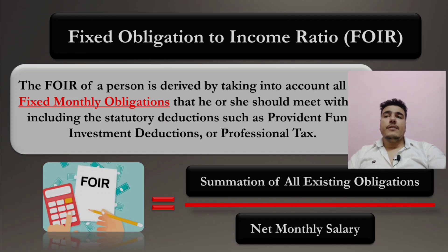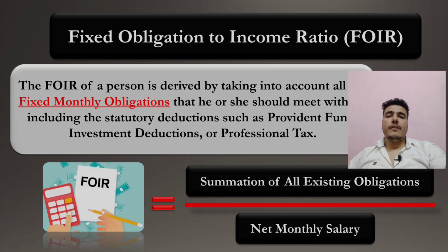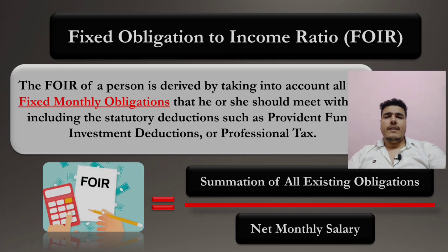If a person has a 25% Fixed Obligation to Income Ratio, the bank can see that only 25% is going towards existing obligations and 75% is disposable income from which the person can repay the new loan. This is how the bank gets an idea of repayment eligibility.